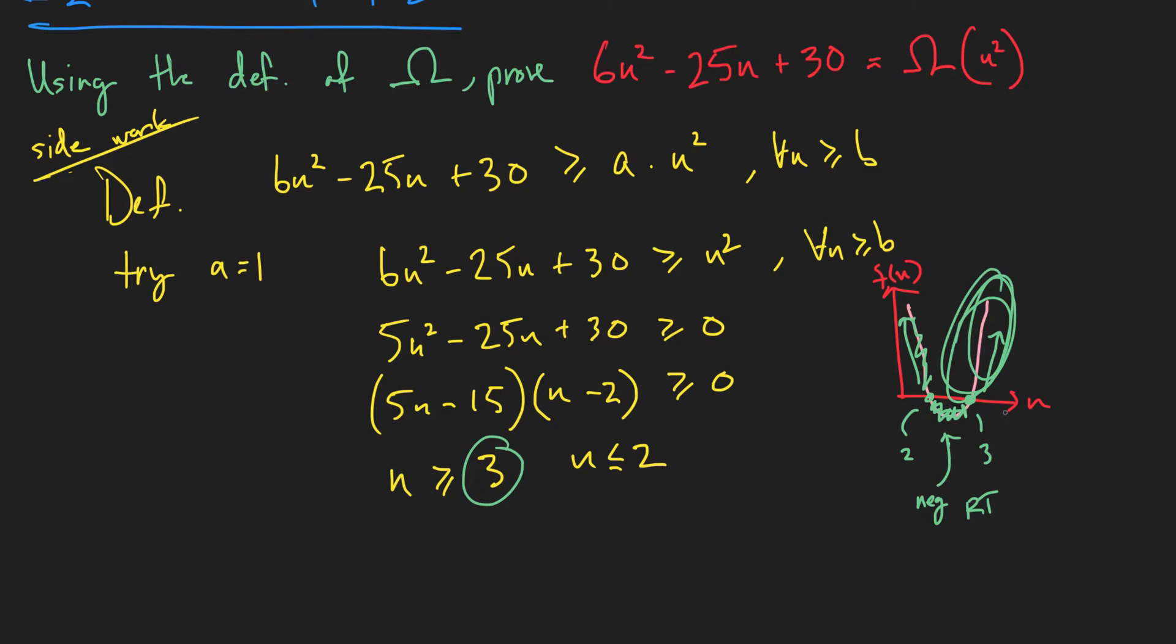So we're going to choose n greater than 3 to be our b. That's the safest choice for us here.